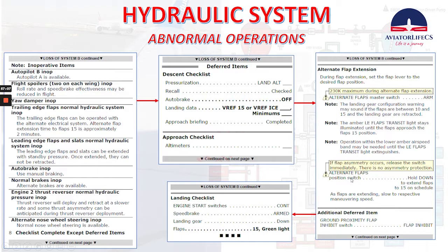Alternate flap position switch — hold down to extend flap to 15 on schedule; as flaps are extended, slow to the respective maneuvering speed. From the FCOM volume 1 limitations section, regarding the alternate flap duty cycle: when extending or retracting flaps with the alternate flaps position switch, allow 15 seconds after releasing the switch before moving it again to avoid damage to the alternate flap motor clutch. After a complete extend or retract cycle from 0 to 15 and back to 0, allow 5 minutes cooling before attempting another extension. Then select flap inhibit on the ground proximity flap inhibit switch and complete the landing checklist — remember flaps 15.